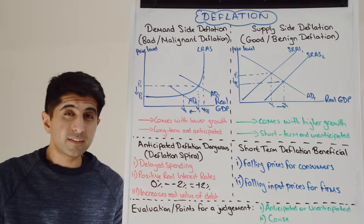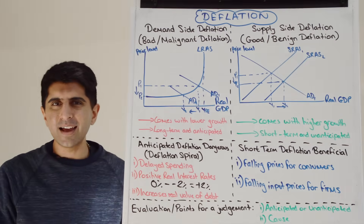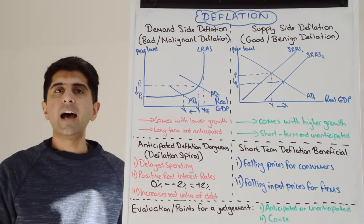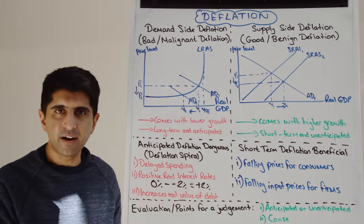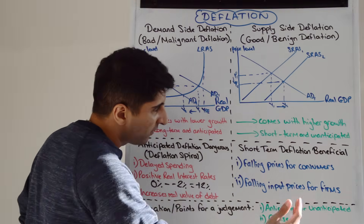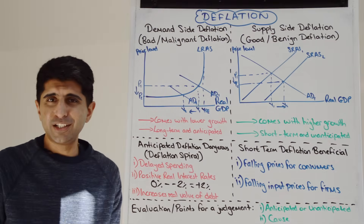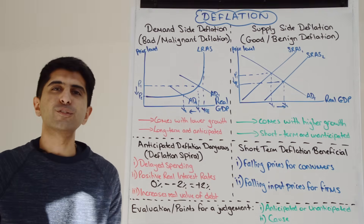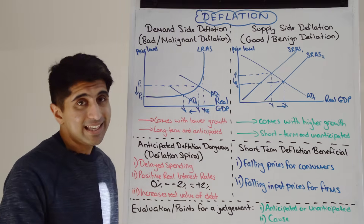The consequences of deflation could be much worse than those of inflation. Just look at Japan — since the 1990s and their banking crisis they've had continuous deflation and found it really hard to get out of it. Greece since their recession in 2010 has also had regular bouts of deflation for a long period of time. Demand-side deflation can be very dangerous if anticipated. Short-term deflation is beneficial — lower prices for consumers improve living standards and purchasing power, and businesses can buy inputs at lower prices, reducing costs and widening profit margins.